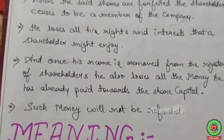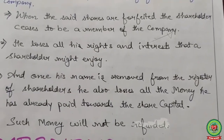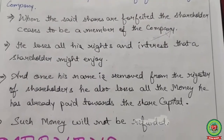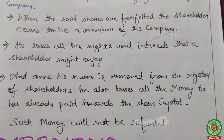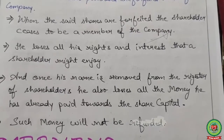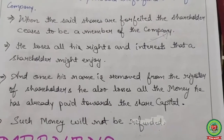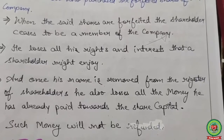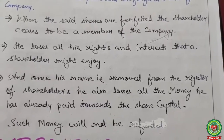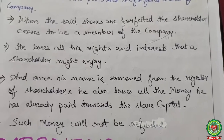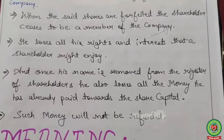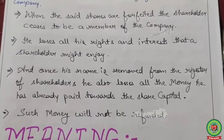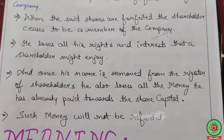For revision, why is forfeiture required? Forfeiture means cancellation of shares. With forfeiture, the company registers a new shareholder and removes the name of the old shareholder from the register. The effects of forfeiture: when shares are forfeited, the shareholder ceases to be a member of the company, loses all rights and interest, and once their name is removed from the register, all money already paid towards share capital is also forfeited — it will not be refunded.